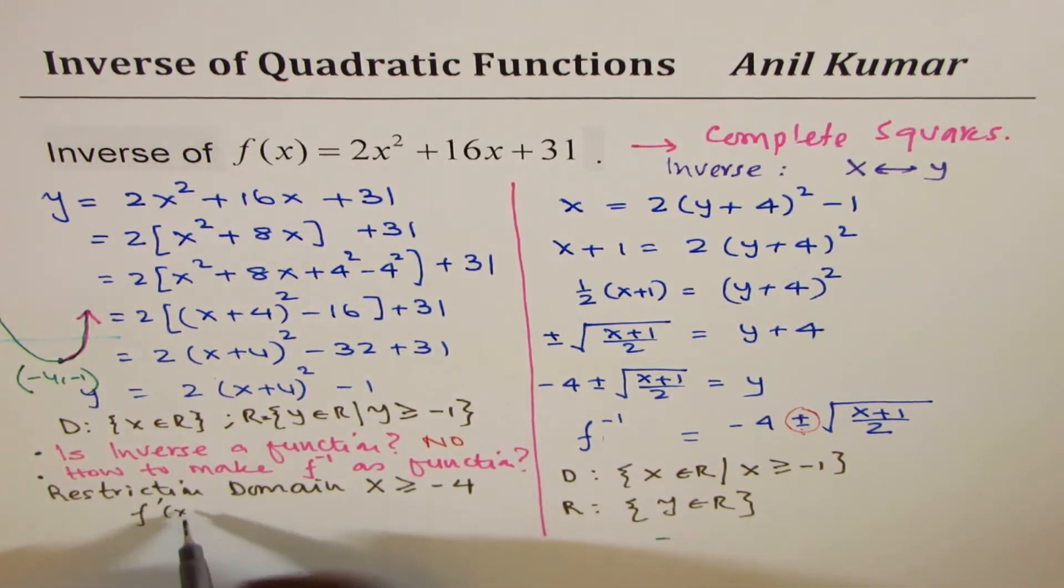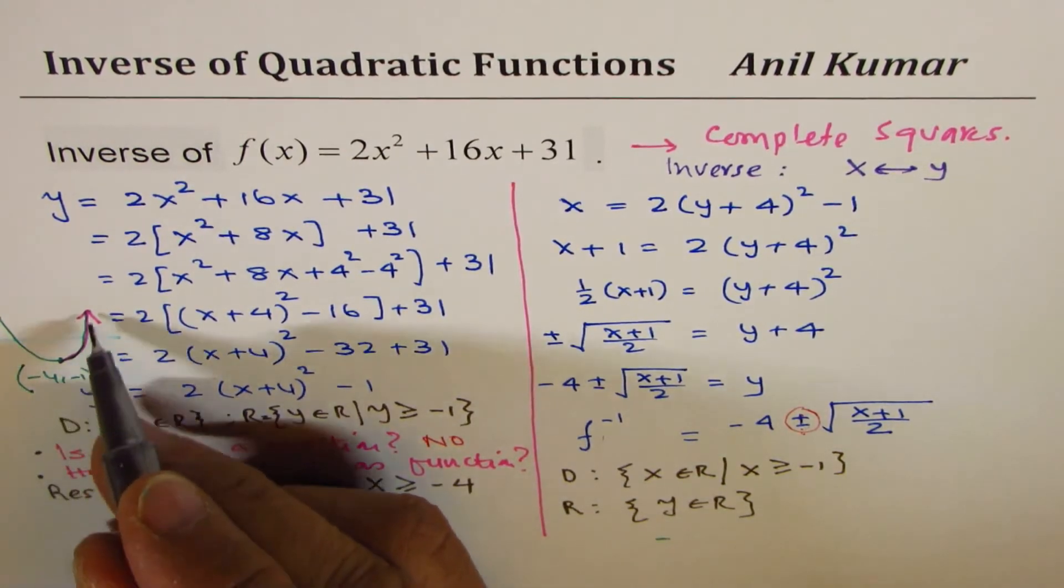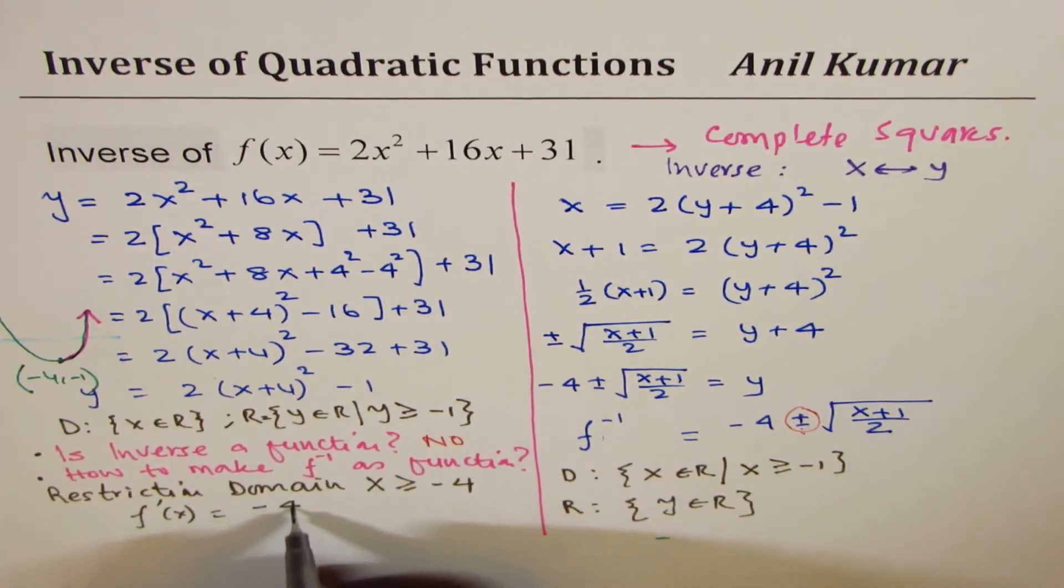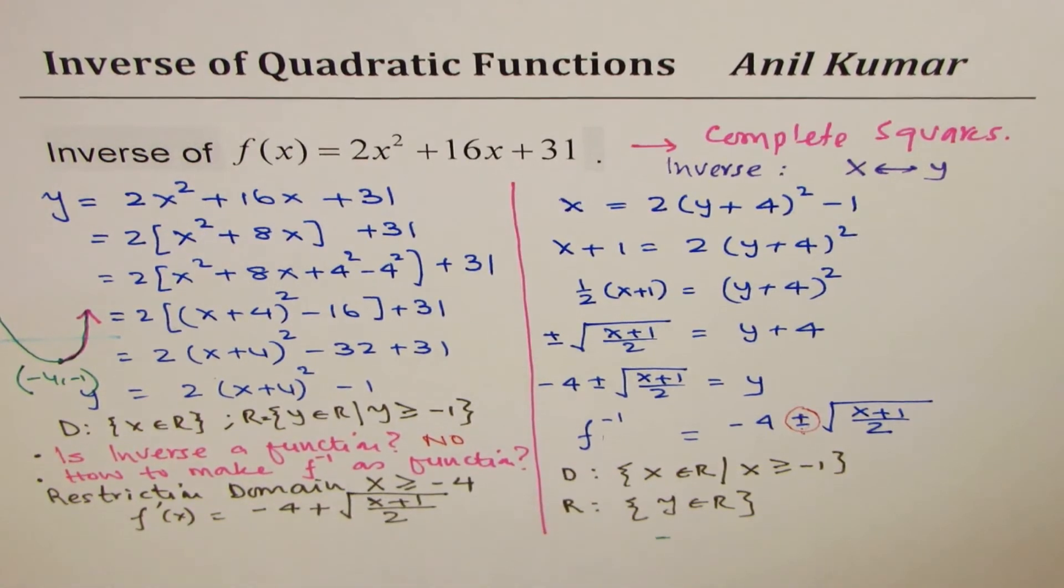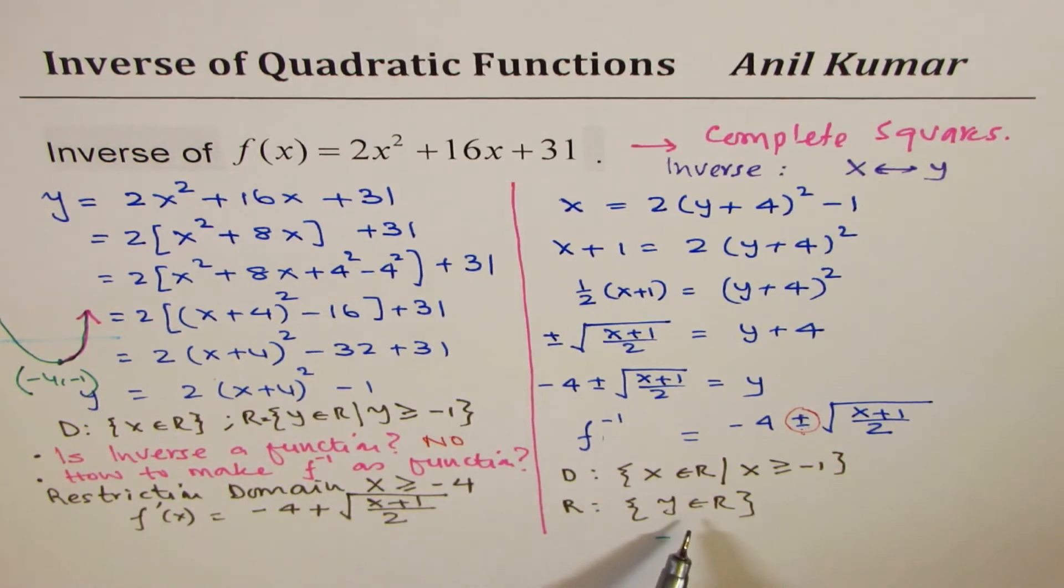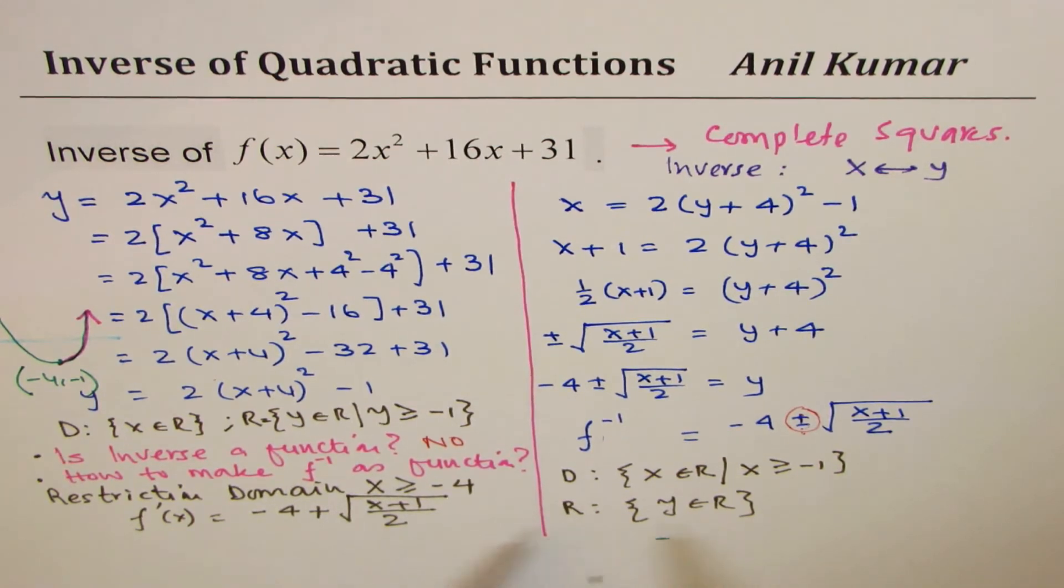our function will be this half with positive sign. It will be minus 4 plus square root of x plus 1 over 2 square root. Do you get an idea? So, in this particular case, the domain is restricted, and therefore, here, the range will be restricted. You get an idea to this value. So, that is how we can actually get inverse as a function.